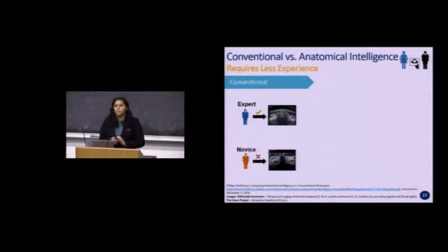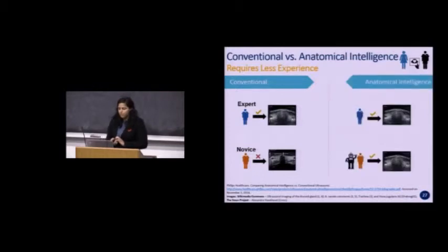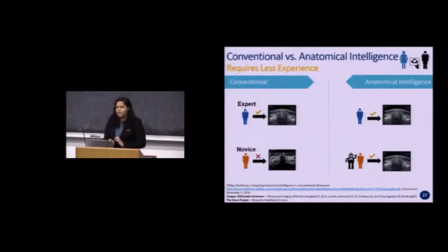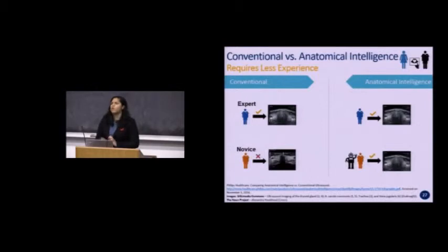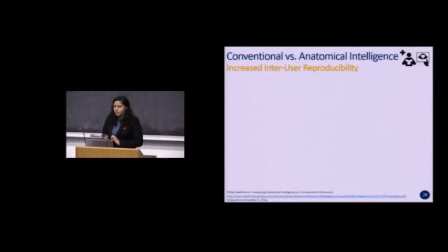Even slight differences in image acquisition can lead to problems with downstream diagnoses and sometimes require additional scans. With anatomical intelligence, this problem can be avoided — a novice using the anatomical intelligence system can use the auto-scan feature to acquire an image very similar to what an expert would acquire, guaranteeing that less experienced users can still image correctly.